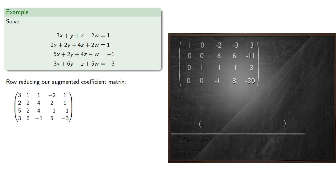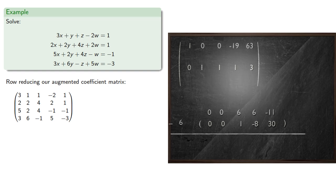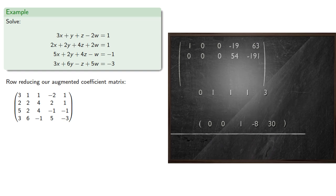Again, for convenience we'll multiply it by negative one. It's our pivot row. If we add it twice to the first row, we'll get a new first row. If we subtract it six times from the second row, that gives us a new second row. And subtracting it from the third row gives us a new third row.